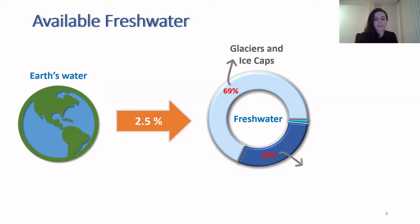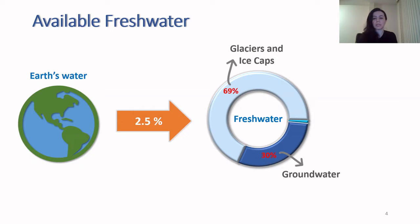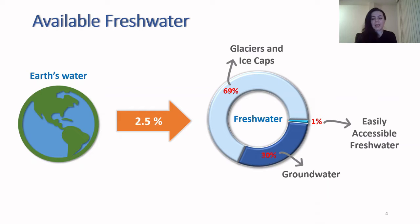30% of this fresh water is in the form of groundwater, easier to access, but expensive because we need to use pumping facilities and electricity to extract water from the deeper layers underground. Only 1% of this fresh water is considered as easily accessible fresh water, and that is the water that is mostly available through rivers and lakes.